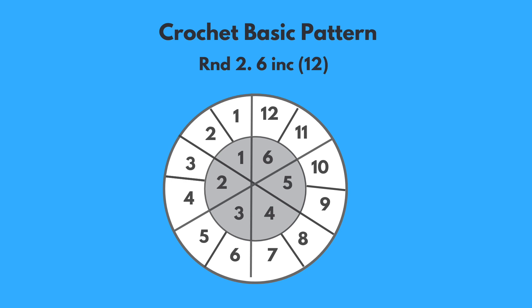The larger white circle on the outside represents round 2, consisting of 12 stitches. In the second round, we inserted our hook into the first stitch marked by the stitch marker and created one single crochet stitch in that hole.